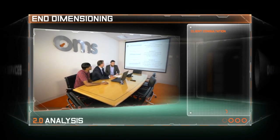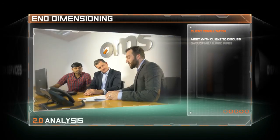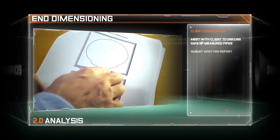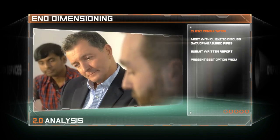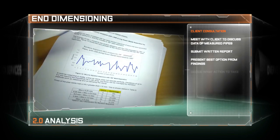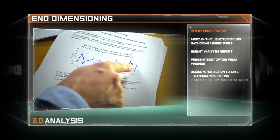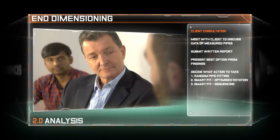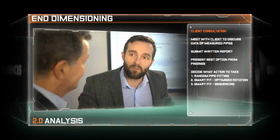Stage two involves the analysis of that measurement data and client reporting. This information crucially reveals the state of the pipes and the degree of imperfections will decide the prescribed course of action in the third and final stage of the N-dimensioning service.